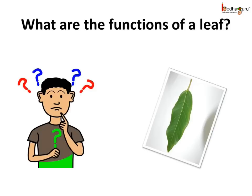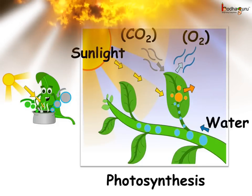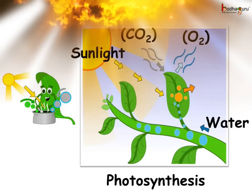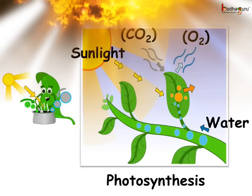What are the functions of a leaf? The main function of the leaf is to make food, hence it is called the kitchen of the plant. The leaves are green because they have a green pigment called chlorophyll. The chlorophyll traps the sunlight and the plant produces food, which is glucose, using carbon dioxide, water and the trapped energy of sunlight. This process of making food is called photosynthesis. Photosynthesis is the main source of oxygen on the earth.